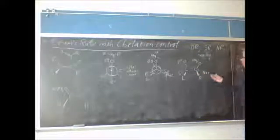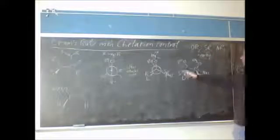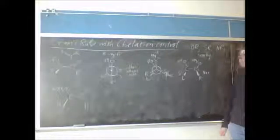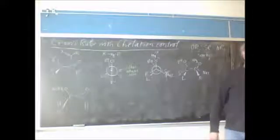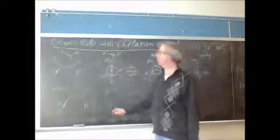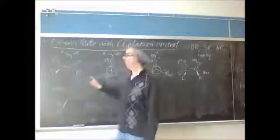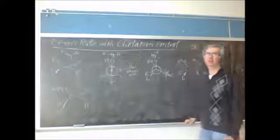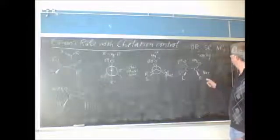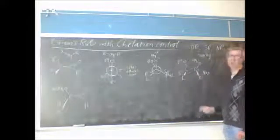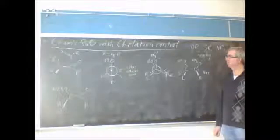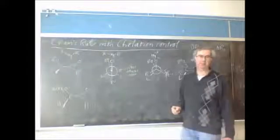So the nucleophile attacked again from the side opposite small. So as long as you line it up correctly when you start, you don't even need to draw the Newman projections. You can do what we did last time, just line up the small with where the nucleophile goes.